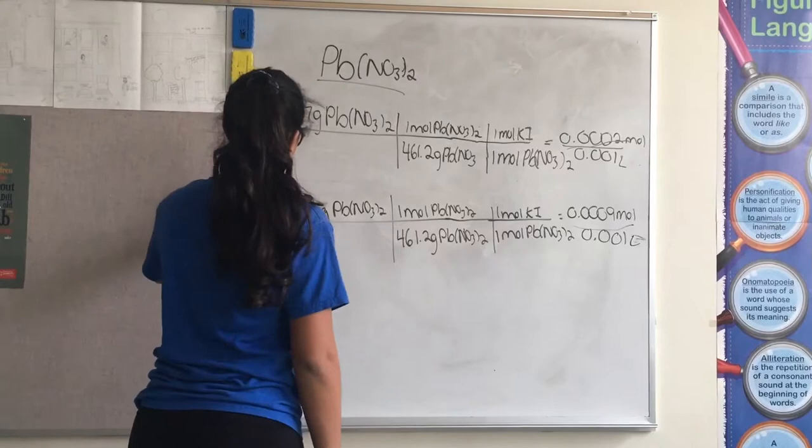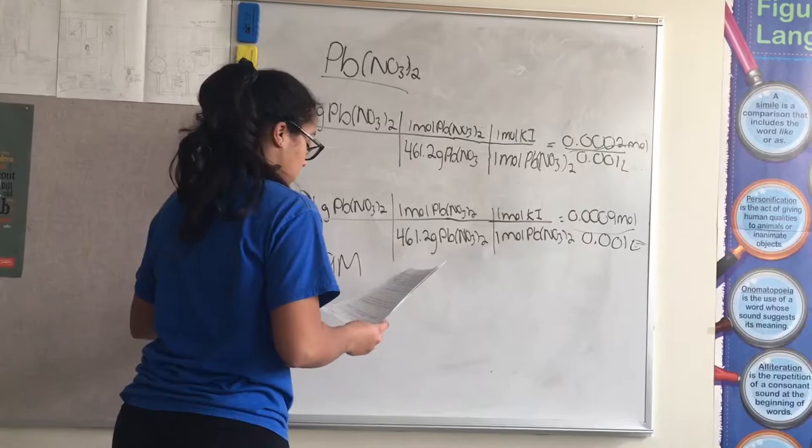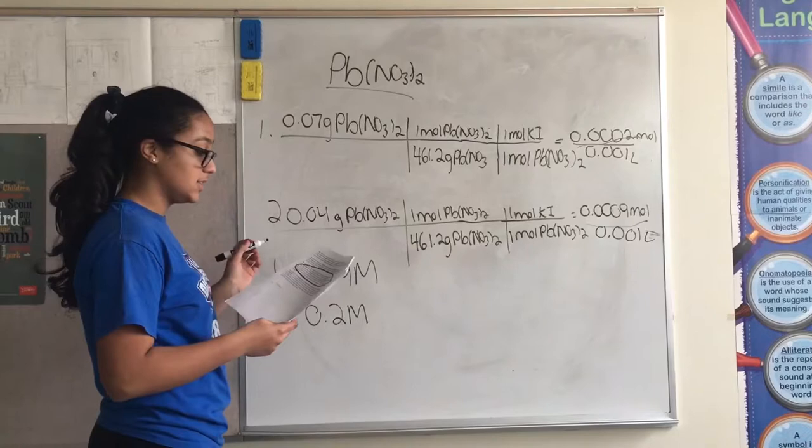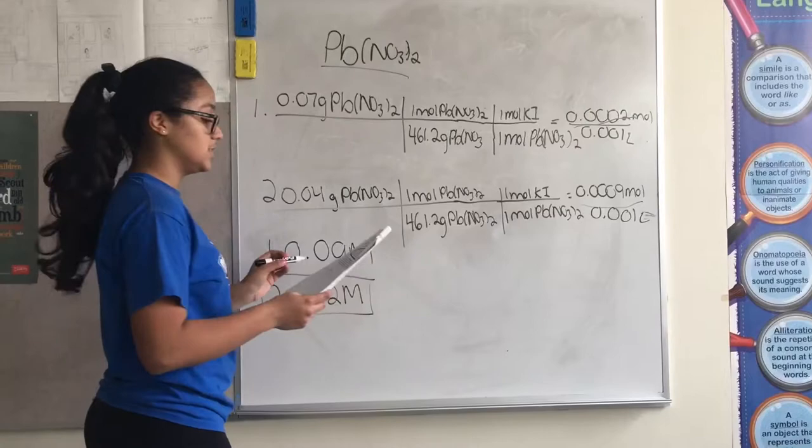The first one had a molarity of 0.009, and the second one had a molarity of 0.2. When we compared it to each of our suspects, the one that was the most accurate was 0.2 molarity, which means that...